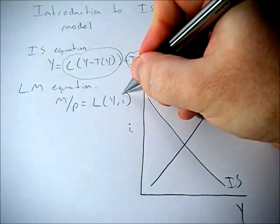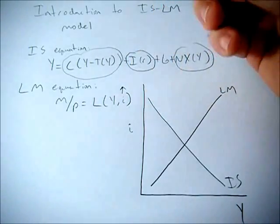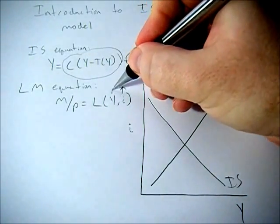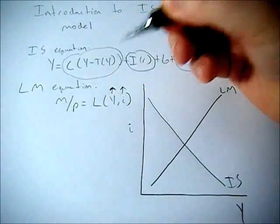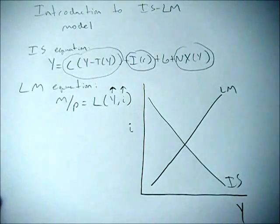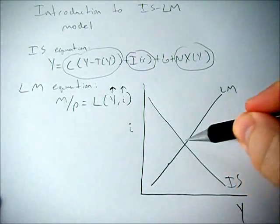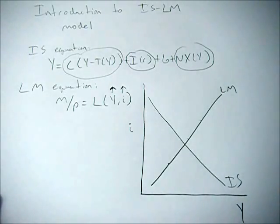So if the interest rate goes up, we want to hold less, we need Y to go up as well in order to motivate holding more money, which is why we get this upward sloping LM curve.